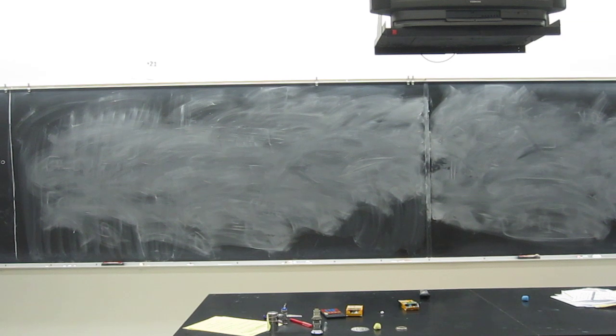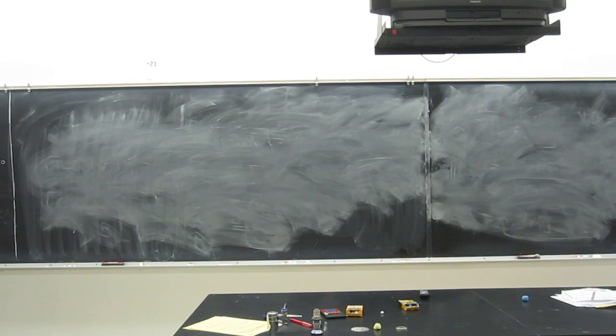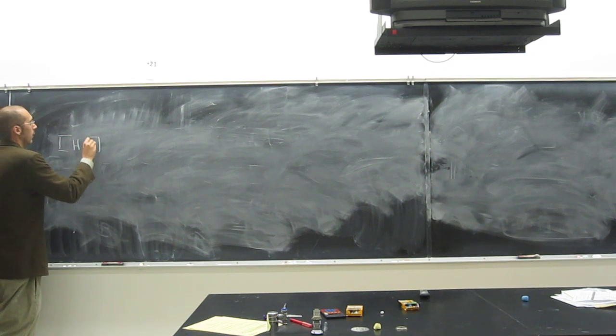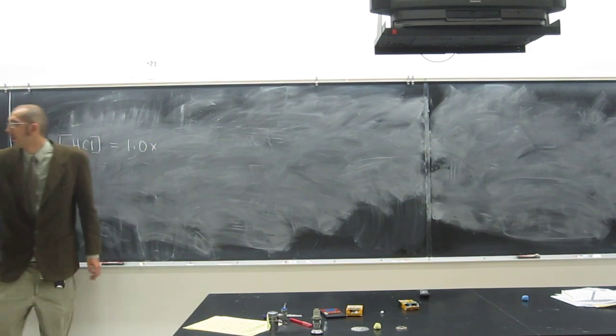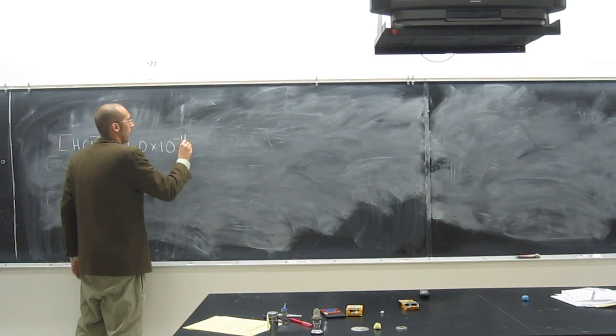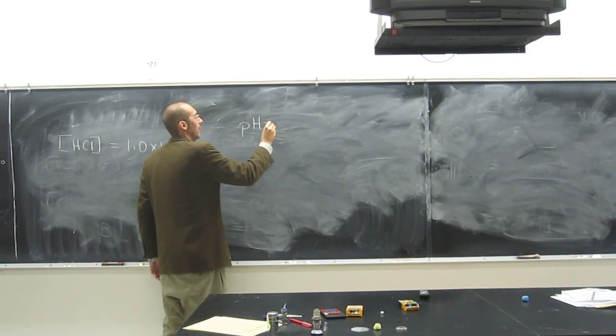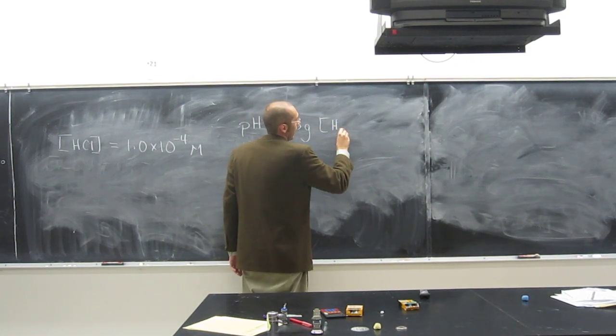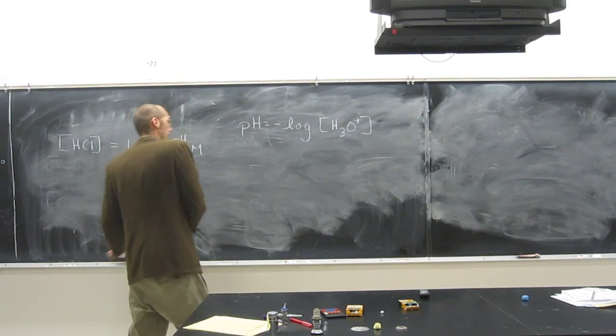So it says, what is the pH of a 1.0 times 10 to the negative fourth molar HCl solution, okay? So we know what? The concentration of HCl is 1.0 times 10 to the negative fourth molar. And we know that the formula for pH is the negative log of the H3O plus concentration, right? Or the H plus concentration, whichever one you want to do.